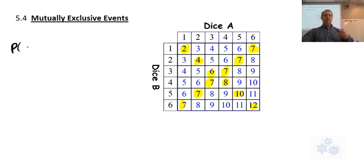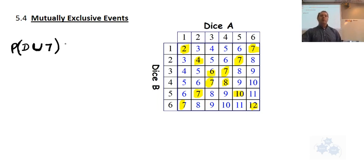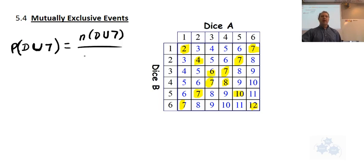So the probability of doubles union sum of seven — where the union symbol means 'or' — would be the number of times we get doubles or seven divided by the total opportunities. You remember that union symbol from a previous chapter.